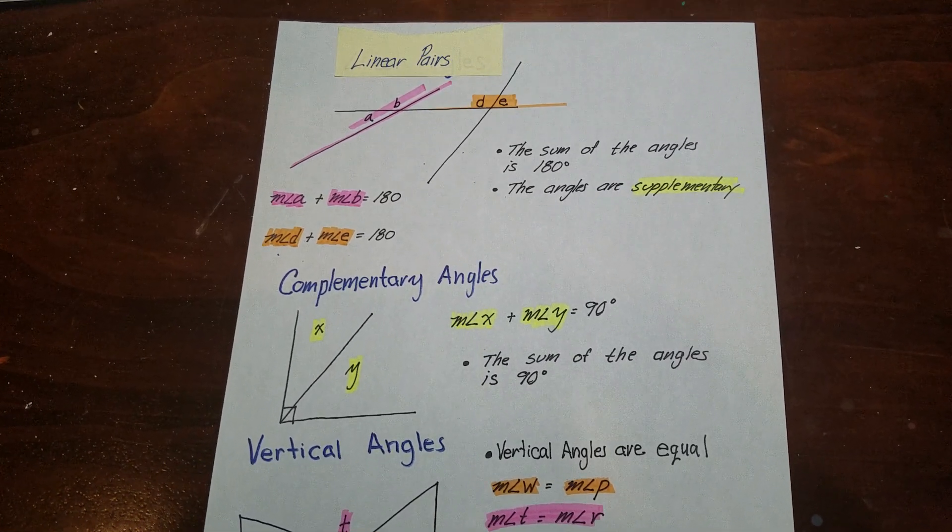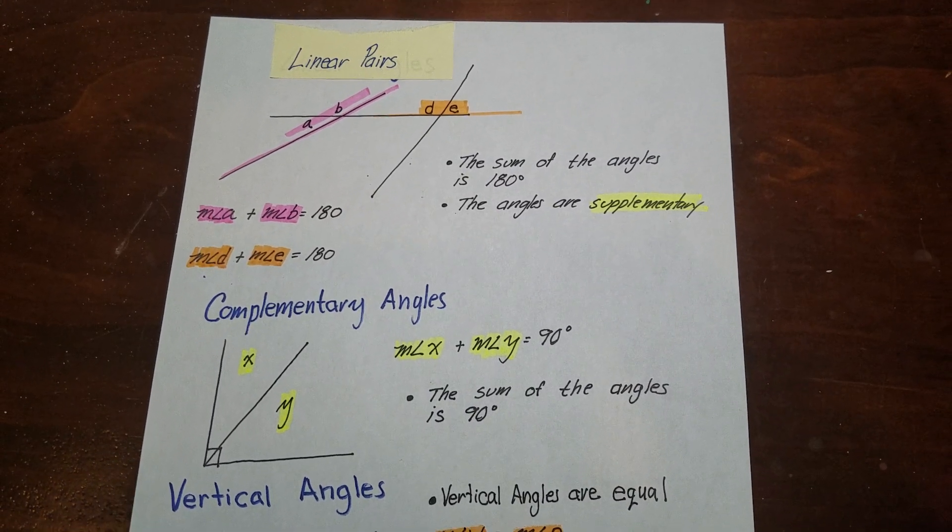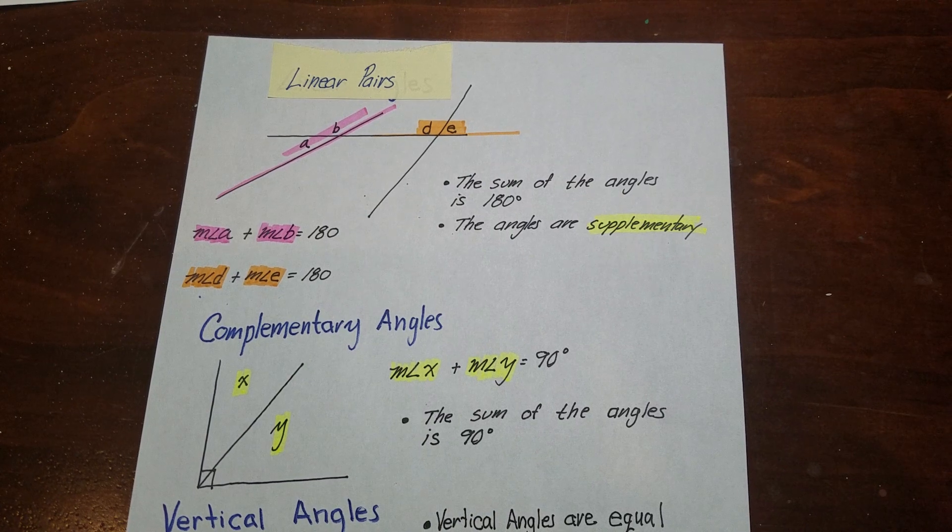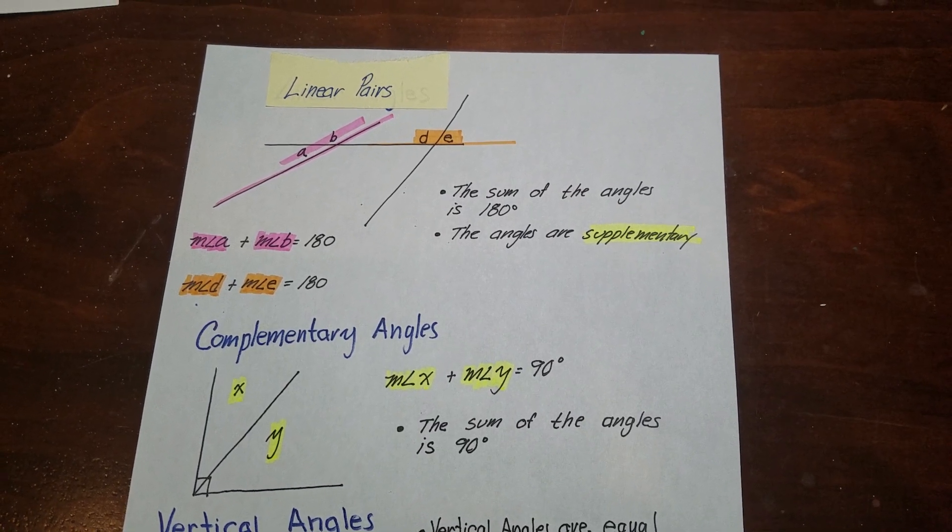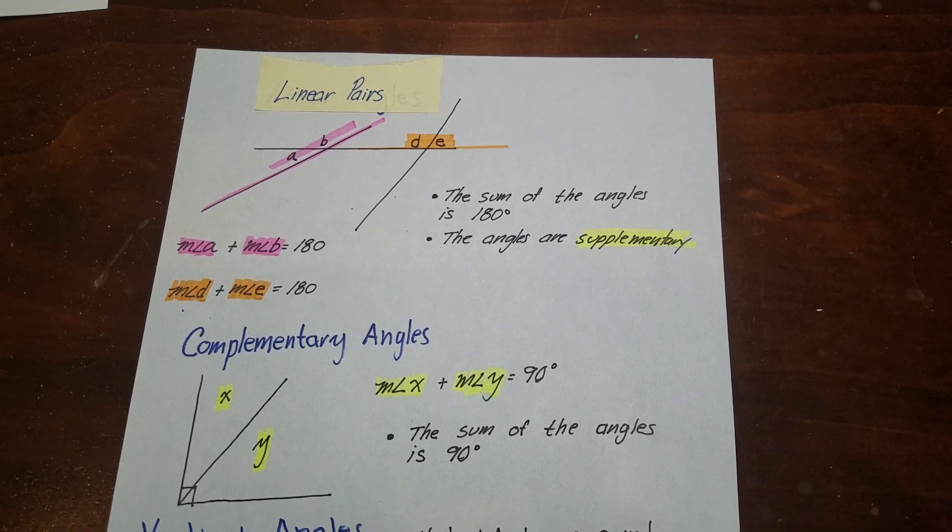Alright, so we're going to go over linear pairs, complementary angles, and vertical angles. This is kind of a review of middle school math. In middle school, they just want you to be able to tell me the definitions of these things, and you do a little bit of work with it, which I'll show you shortly.